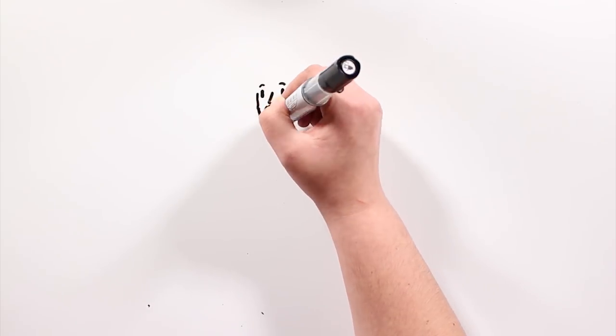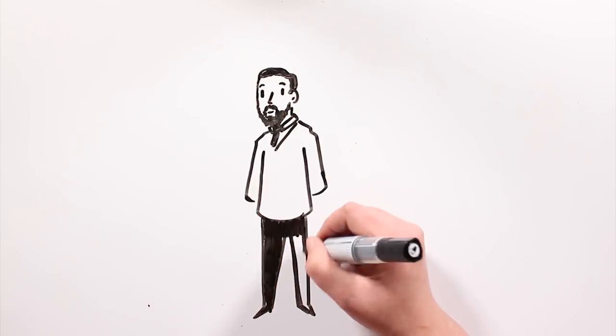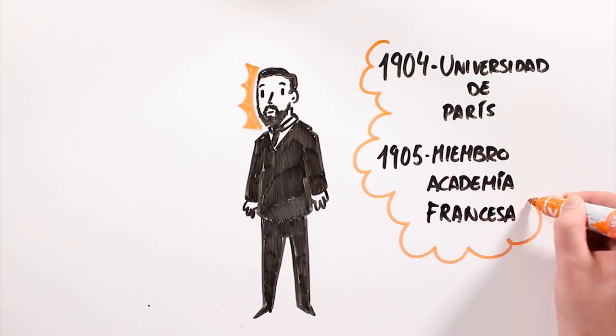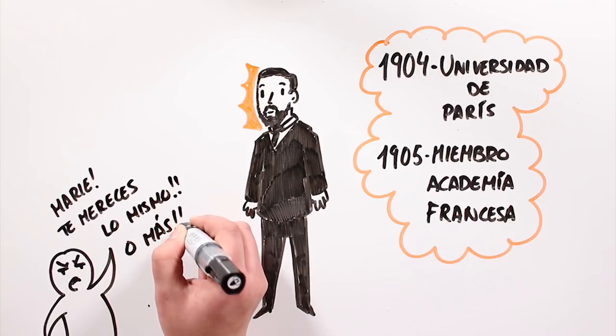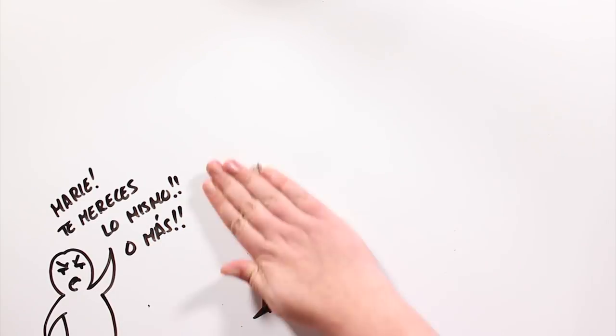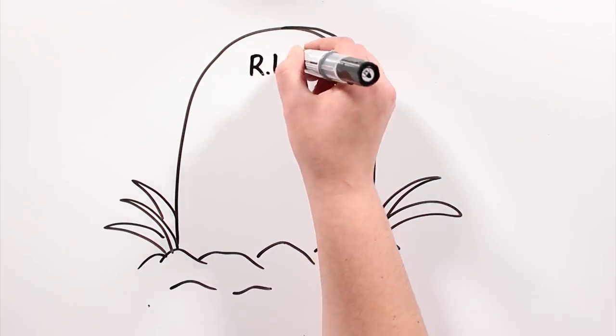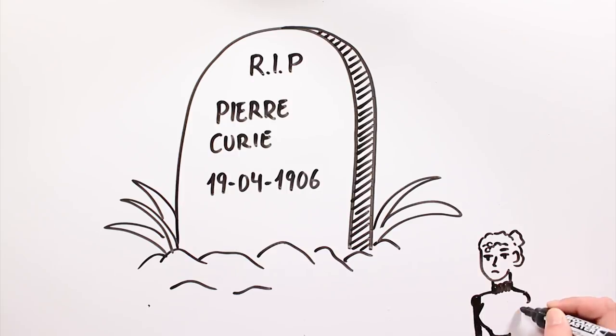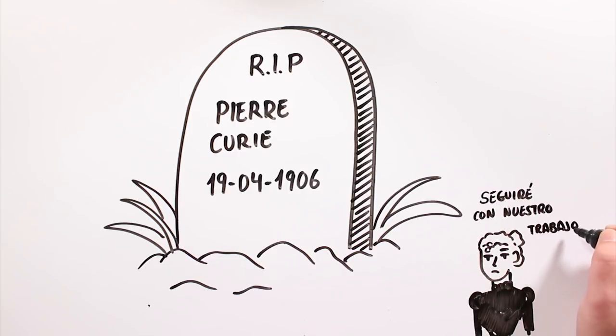In 1904, Pierre was named a professor at the University of Paris, and in 1905, member of the French Academy. These positions weren't really for women, so Marie didn't get as much recognition. Sadly, Pierre died run over by a horse cart on April 19th, 1906. From that moment on, Marie decided to take on his classes and continue with the research.